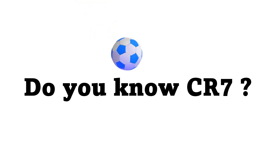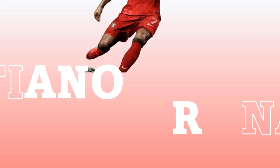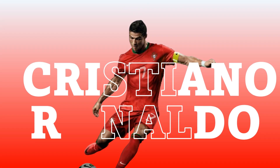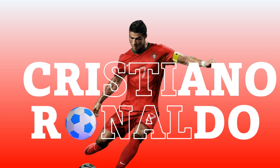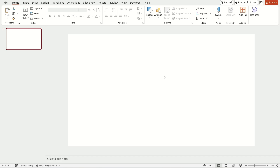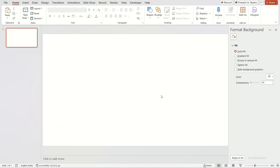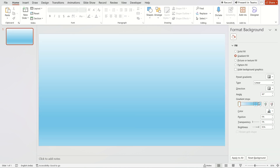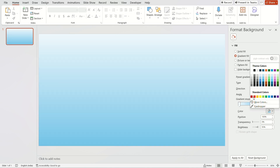Hello friends, welcome to the video which makes Tink stronger in PowerPoint. Don't skip the video. First, right-click on the slide and select the format background. Choose the gradient option, then adjust the gradient stops, and then choose the color to red.